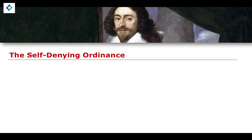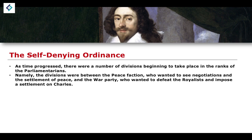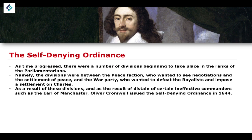It should be noted that even though the Parliamentarians had many advantages, there was still division between members of the parliamentarian forces — as seen in the cautious actions of the Earl of Manchester. Divisions among the Parliamentarians fell along two sides: the peace faction, who wanted negotiations and a settlement with the Royalists, and the war party, who wanted a defeat of the Royalists and to impose a settlement on Charles rather than negotiate with him.